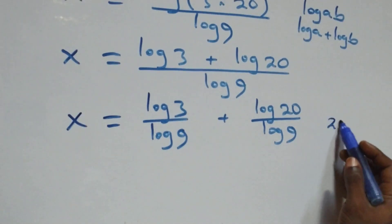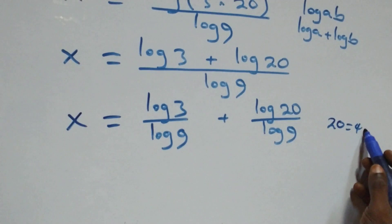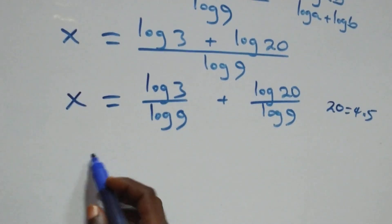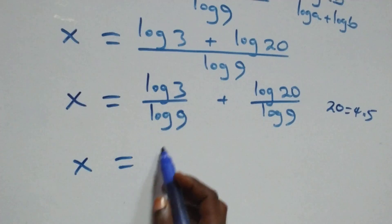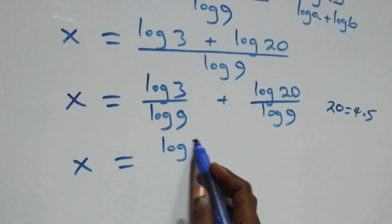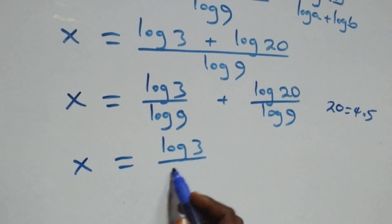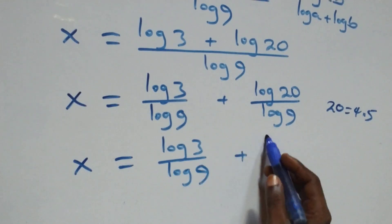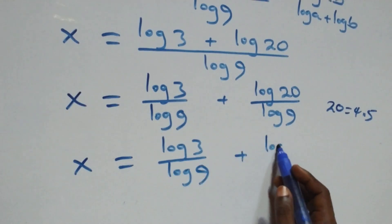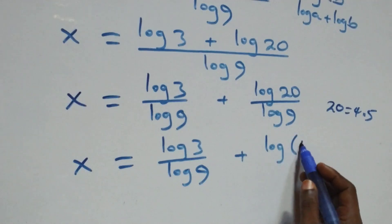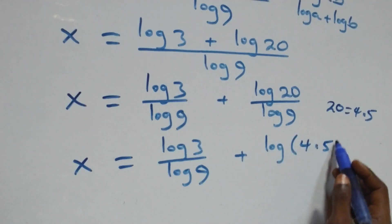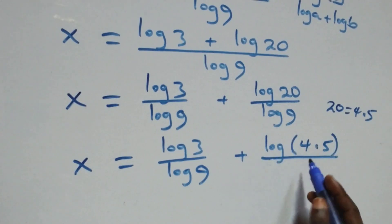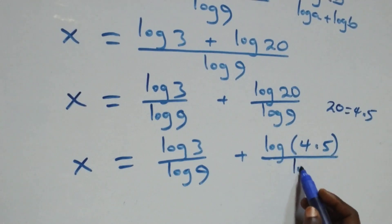Expressing 20 as 4 times 5, this becomes x equals log 3 over log 9 plus log(4 times 5) over log 9.